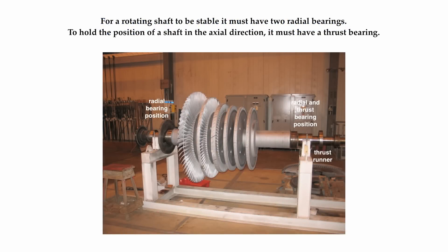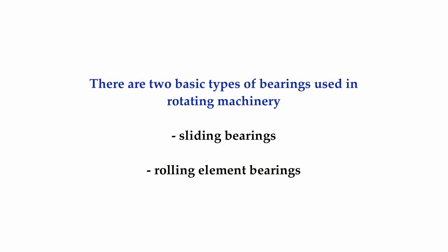Shown here is a rotor from a steam turbine. A rotor consists of a shaft and rotating parts attached to it, like blading, impellers, or an armature. One of the basic design principles is that for a rotating shaft to be stable, it must have two radial bearings. Radial bearings maintain the center line of the shaft on a fixed axis of rotation. A thrust bearing prevents the shaft from moving in an axial direction so the rotating part doesn't touch a stationary part.